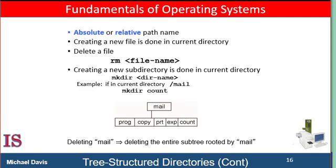With a tree-structured directory system, users can be allowed to access, in addition to their own files, the files of other users. For example, user B can access a file of user A by specifying its path name, using either an absolute or relative path name. Alternatively, user B can change his or her current directory to be user A's directory and access the file by its name. Of course, this all assumes that the appropriate permissions have been assigned to allow user B to do that.